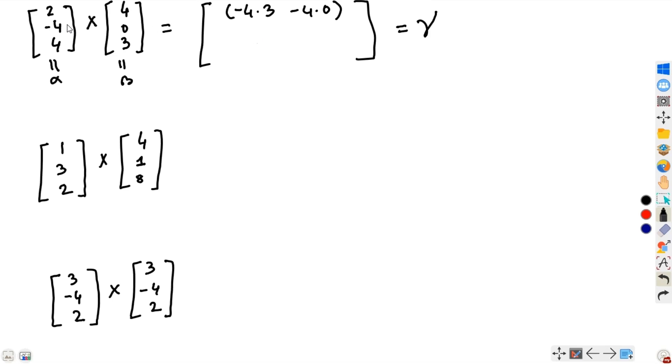For the second entry, we ignore the second components of alpha and beta, leaving the first and third components. So, 2 times 3 minus 4 times 4. Finally, for the third component, we ignore the third components of alpha and beta. It is 2 times 0 minus 4 times 4.